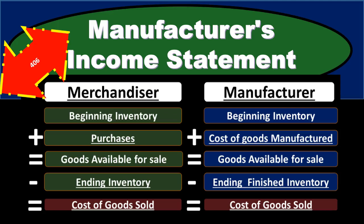In this presentation, we will take a look at some of the components of a manufacturer's income statement, comparing and contrasting where a manufacturer's income statement may differ from a service company or a merchandiser. A manufacturer makes the inventory, whereas a service company has no inventory, and a merchandiser simply purchases and sells inventory rather than making it.